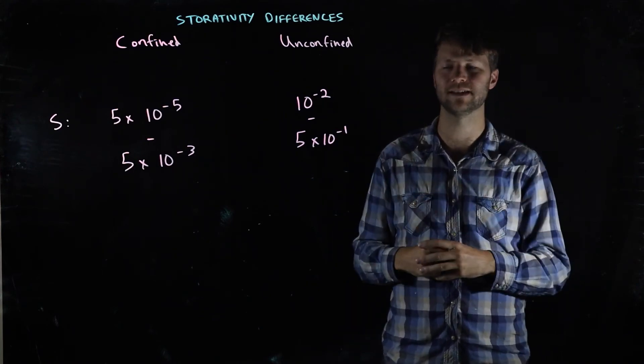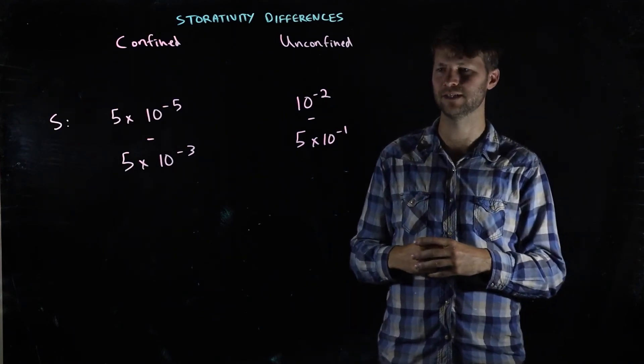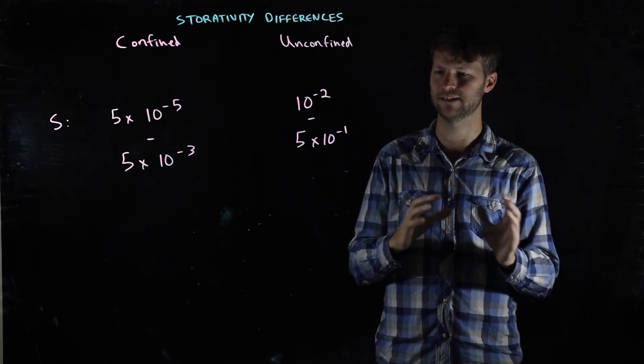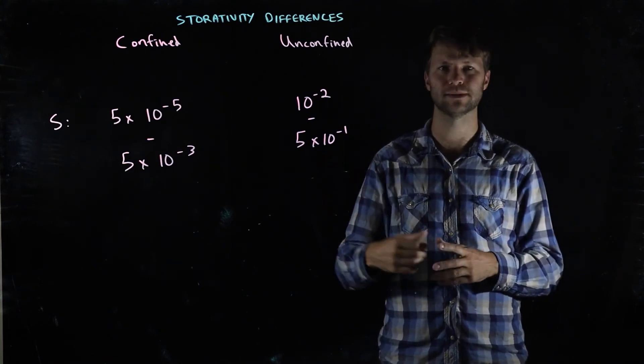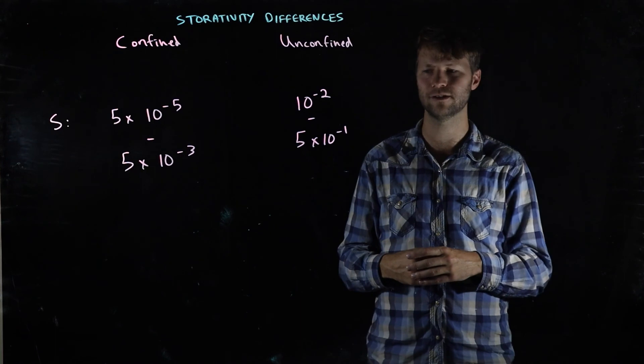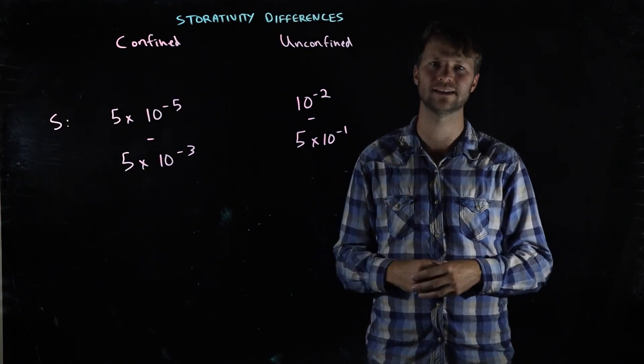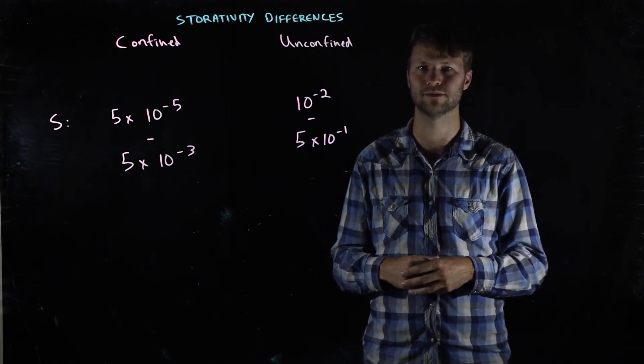There's going to be some water that stays behind due to tension that's held against gravity—that's the specific retention. But the specific yield is pretty close to the porosity, and the porosity of some of these aquifer units can be really, really big.